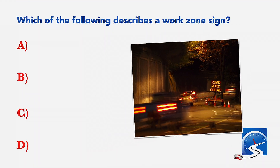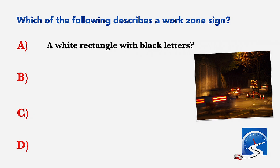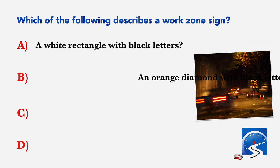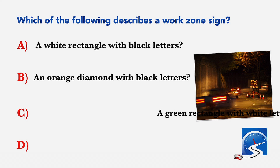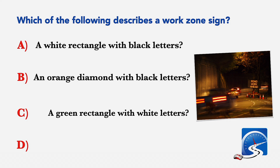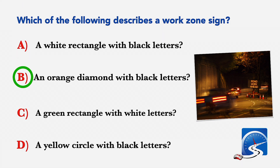Which of the following describes a work zone sign? A: A white rectangle with black letters. B: An orange diamond with black letters. C: A green rectangle with white letters. D: A yellow circle with black letters. Correct answer B: An orange diamond with black letters and symbols.